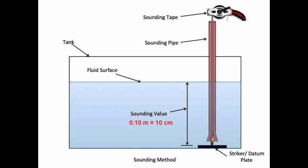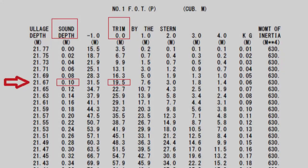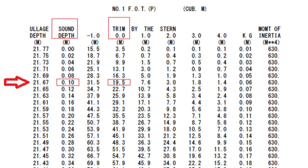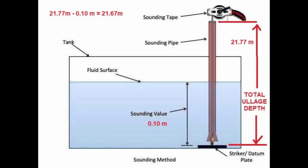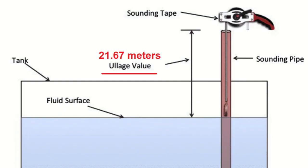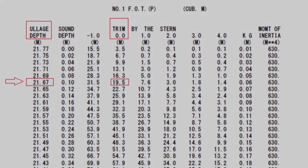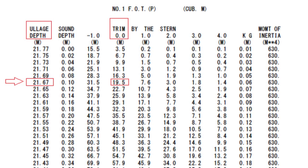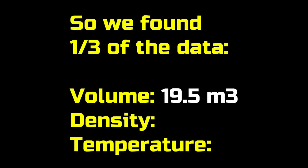For example, we found that the sounding value is 0.10 meters, equal to 10 centimeters. We go to the sounding book and find that this equals 19.5 cubic meters, always for zero trim, meaning the vessel is on even keel. Or we calculate 21.77 meters minus 0.10 meters equals 21.67 meters — so the ullage value is 21.67 meters. We open the manual sounding book again and find it is exactly the same: 15.5 cubic meters. So we found one of the three data points that we need.